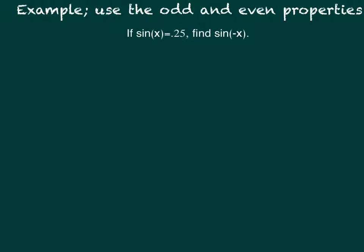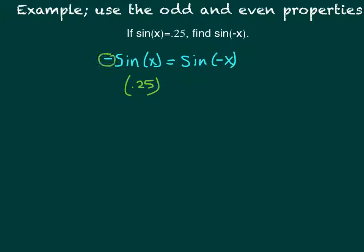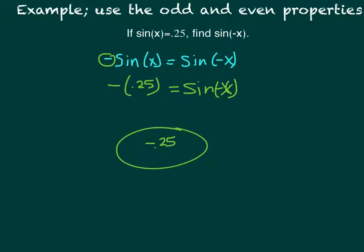For the next one, if sine of x equals 0.25, we want to find sine of negative x. Remember the property: sine of negative x equals negative sine of x. So since sine of x is 0.25, sine of negative x equals negative 0.25. And that's it.